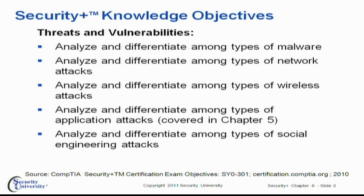In this chapter, we want to take a closer look at threats and vulnerabilities, as required for the Security Plus knowledge objectives. Number one, we want to analyze and differentiate among different types of malware, network attacks, wireless attacks — both Wi-Fi, the 802.11 technology, as well as Bluetooth. We previously covered application attacks such as SQL injection and cross-site scripting in Chapter 5, but this is all part of what you need to know in preparing for the Security Plus exam.